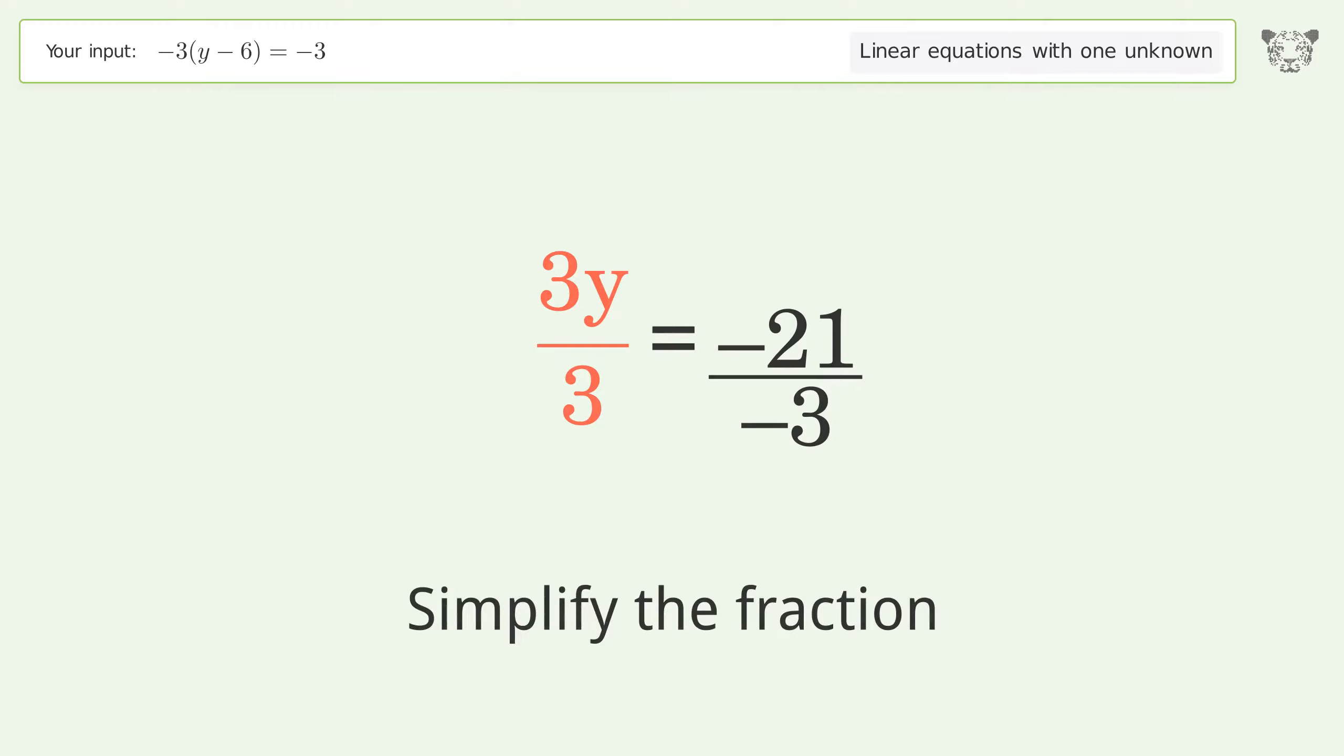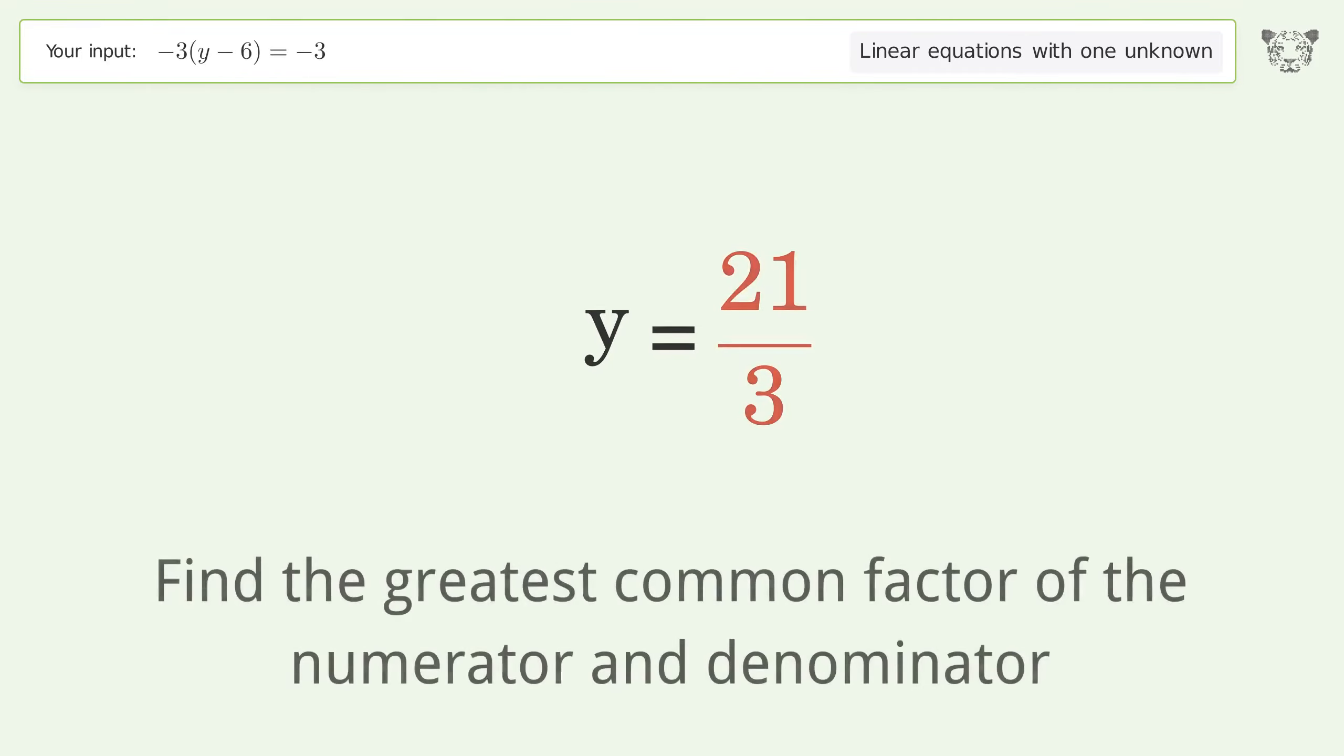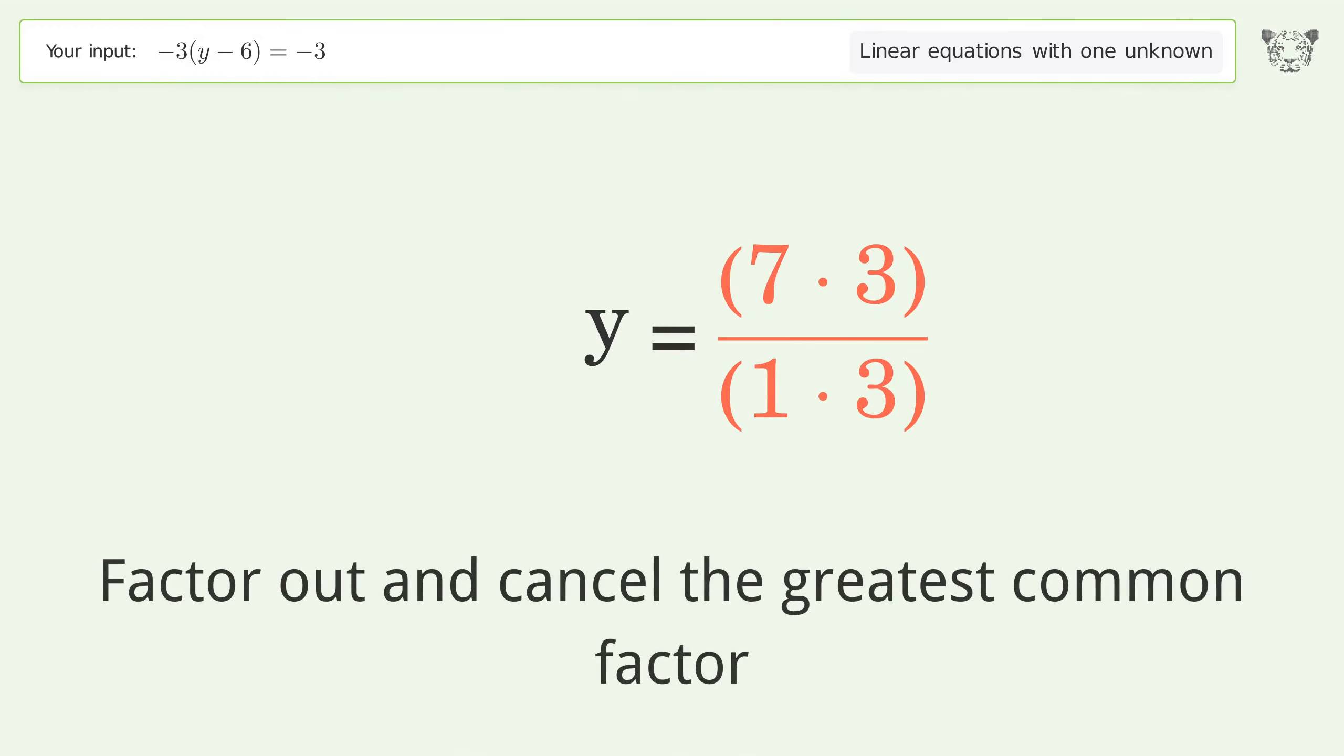Simplify the fraction. Cancel out the negatives, then find the greatest common factor of the numerator and denominator. Factor out and cancel the greatest common factor.